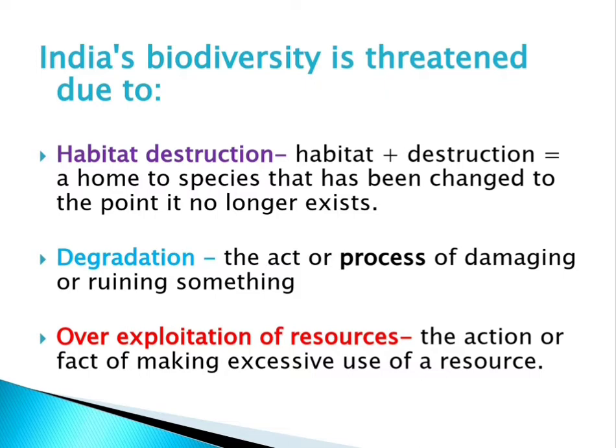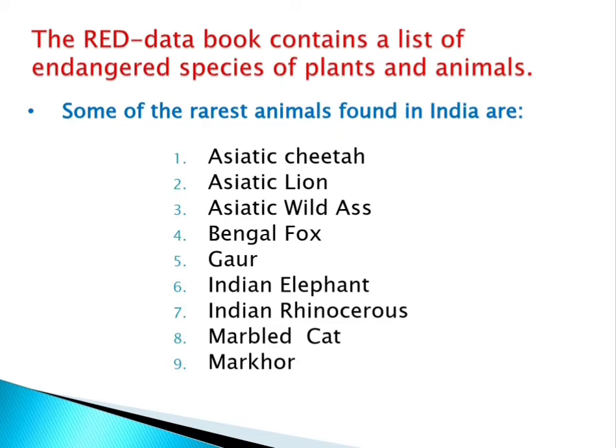The next reason is over-exploitation of resources. Biodiversity provides a large number of resources useful to mankind, and human interference — making excessive use of such resources — threatens biodiversity. After this exploitation, animals and plants become endangered and are enlisted in a book called the Red Data Book, which contains a list of endangered species of plants and animals.